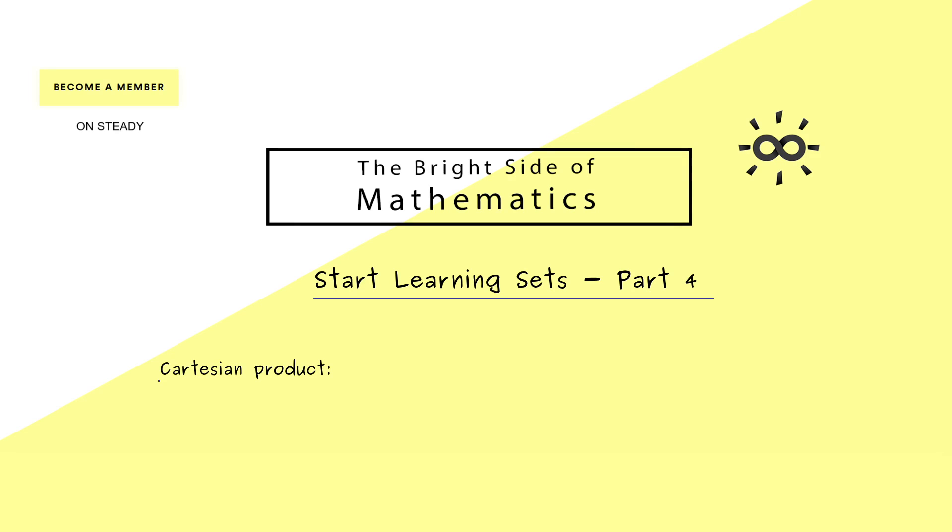The Cartesian product, also called just product set, is a new set we can form when we have two sets. The symbol we use is the cross between the two sets as a multiplication sign. Then this denotes the set of all pairs with an order, where the first element comes from A and the second element comes from B.